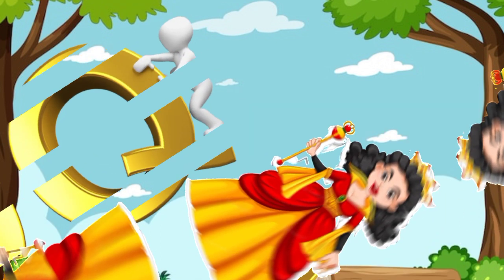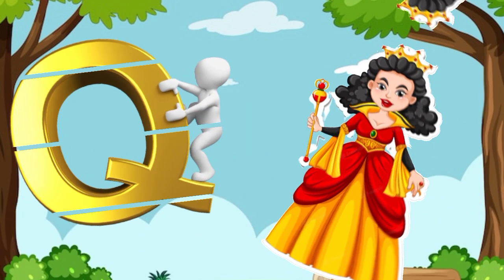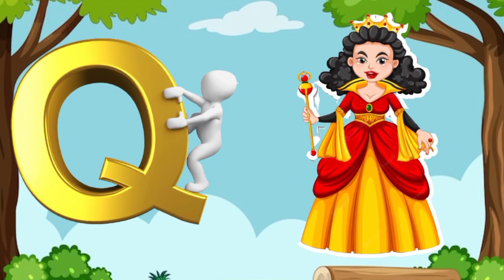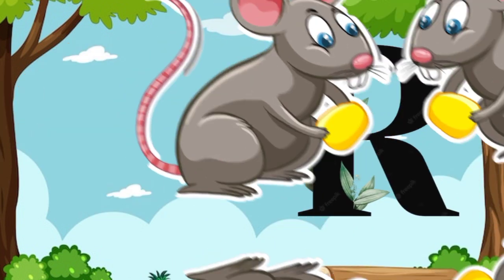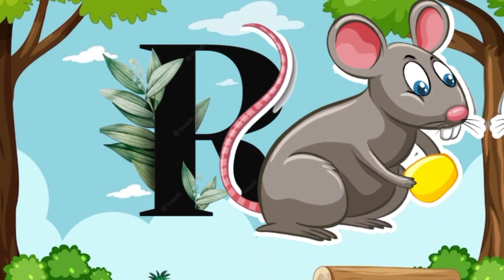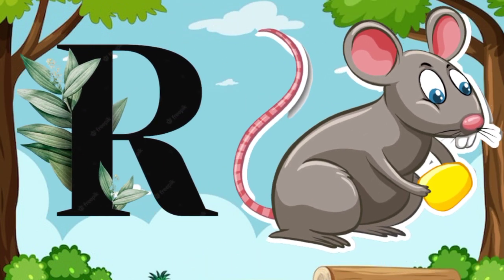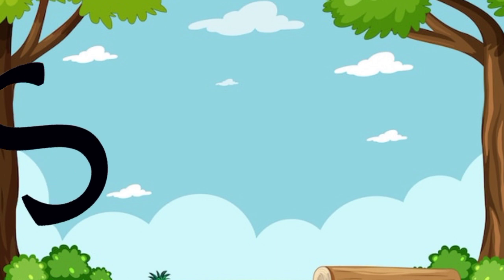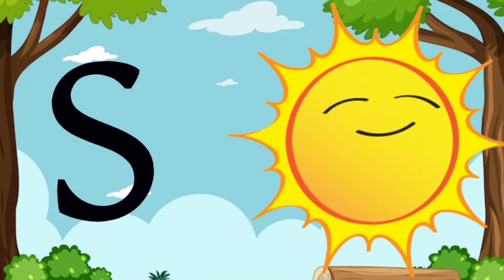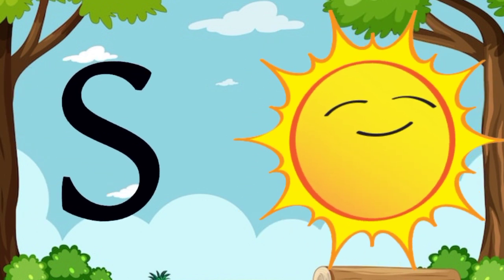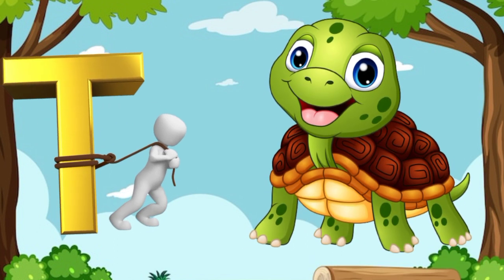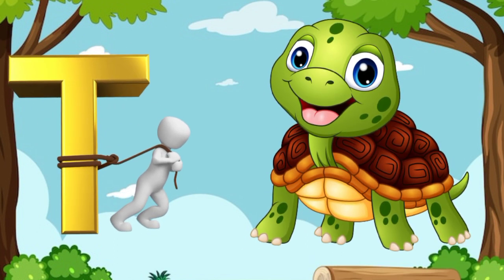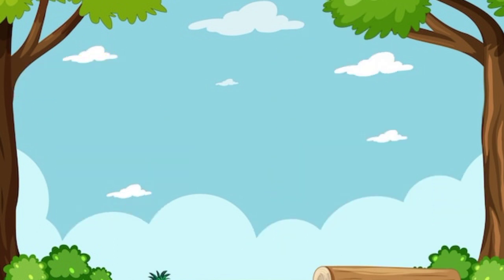Q is for queen, qu-qu-queen. R is for rabbit, r-r-rabbit. S is for sun, s-s-sun. T is for toad, t-t-toad.